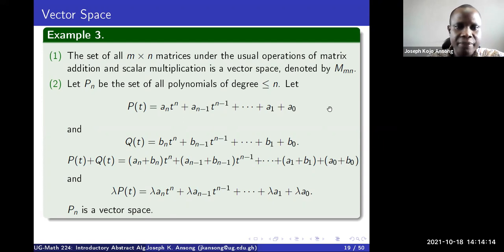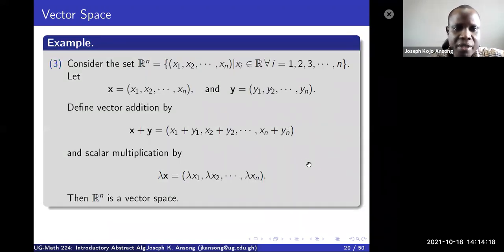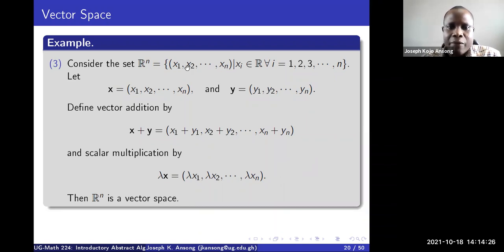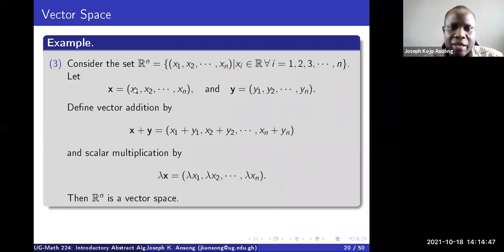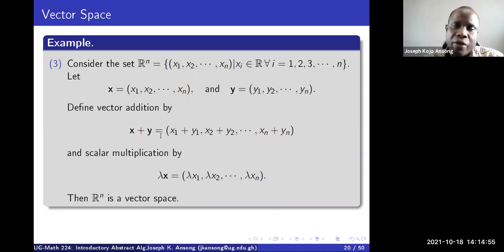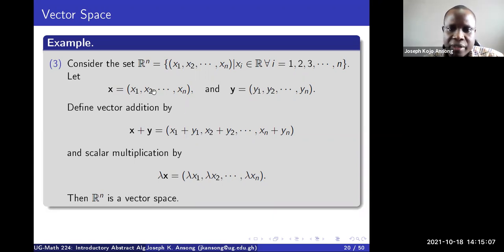A familiar example is the set ℝⁿ, with elements (x_1, x_2, ..., x_n) where each x_i is a real number. For a vector space you need to specify the addition and scalar multiplication. Given two elements x and y in ℝⁿ, addition is defined component-wise: x plus y gives (x_1 + y_1, x_2 + y_2, ..., x_n + y_n).